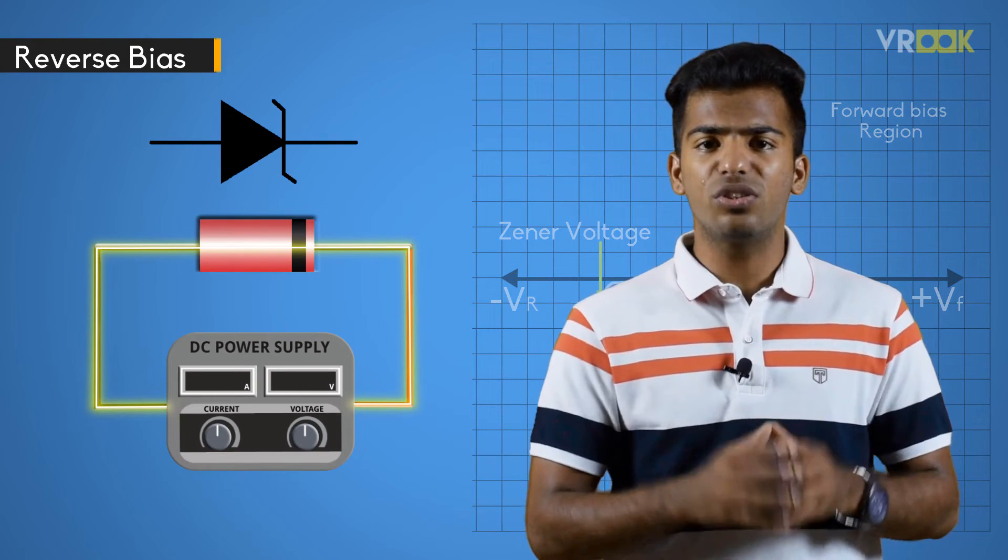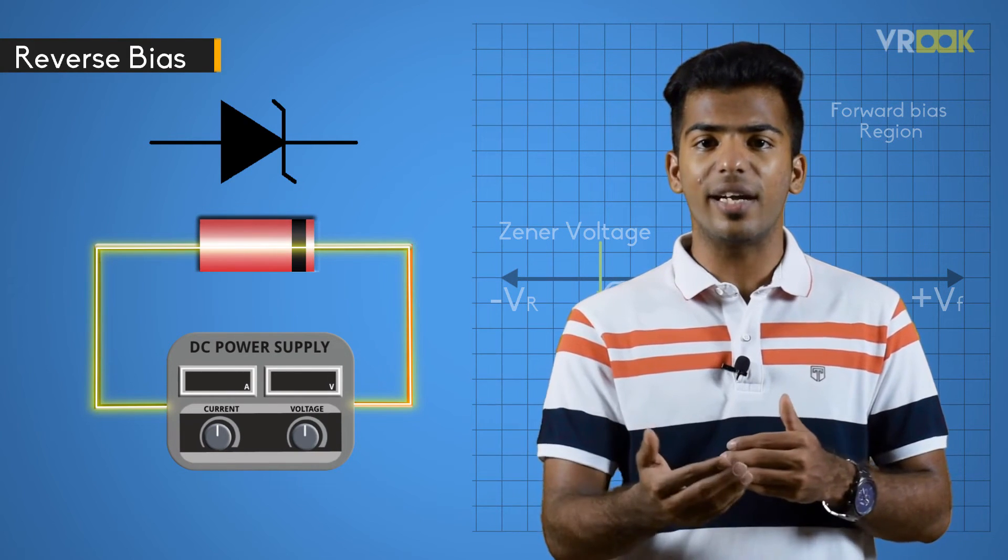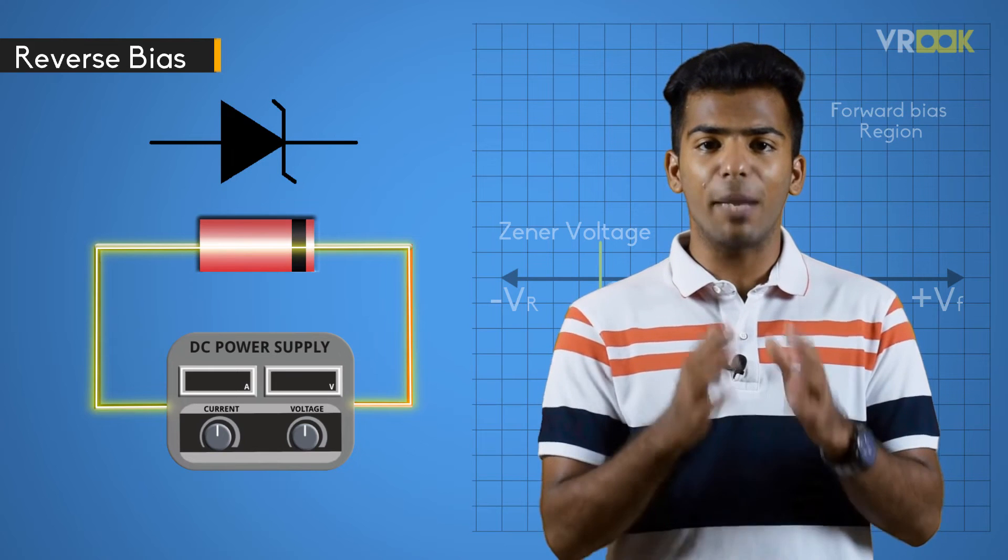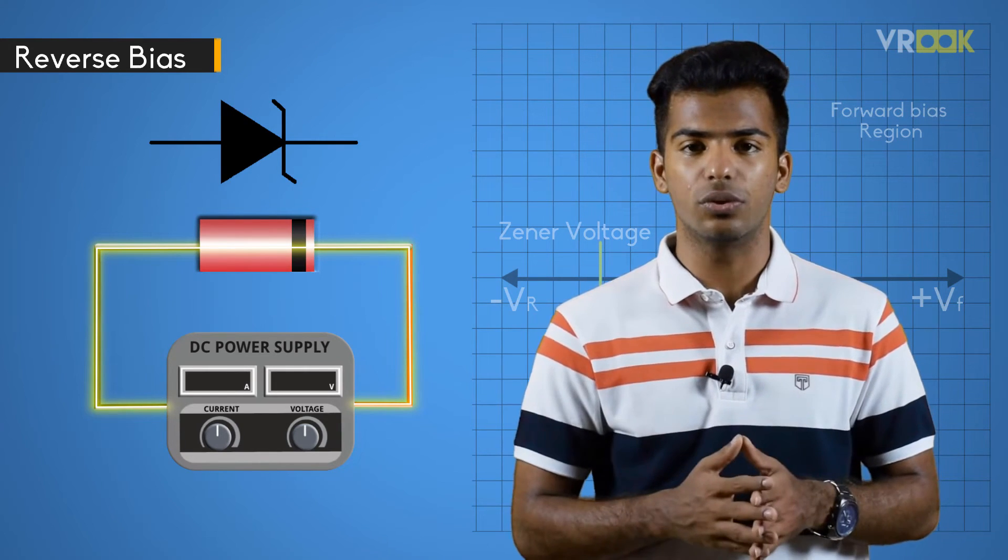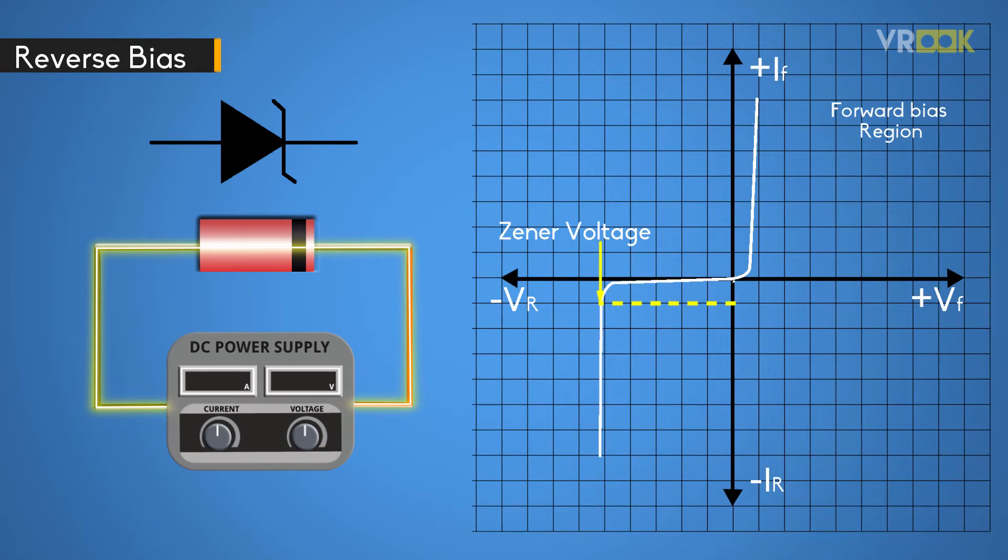The point at which Zener voltage triggers the current to flow through the diode can be very accurately controlled in the doping stage of the diodes. This Zener breakdown voltage on the IV curve is almost a vertical straight line. We can also see various standard Zener voltage curves.